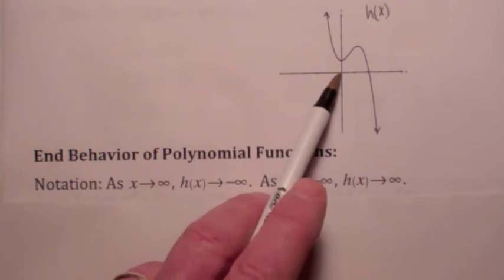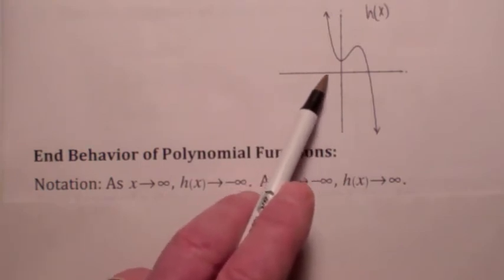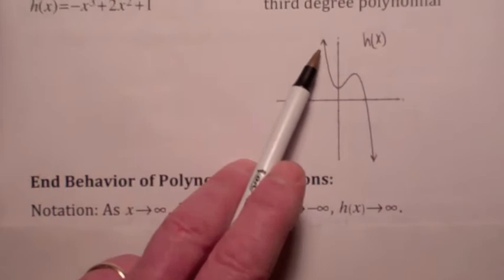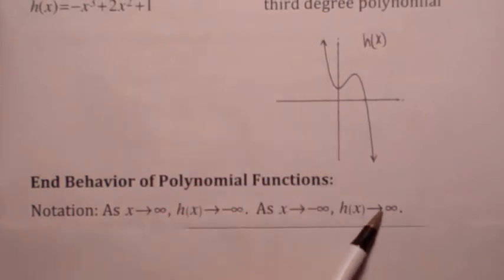Similarly, as x goes to the left, which means x is going to negative infinity, for this function, the graph is going up. So we'd say h of x is going to infinity.